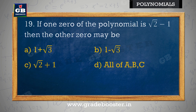If one zero of the polynomial is √2 − 1, then the other zero may be: yadi polynomial ka ek zero √2 − 1 hai, to doosra zero ho sakta hai — a) 1 + √3, b) 1 − √3, c) √2 + 1, d) all of the above.